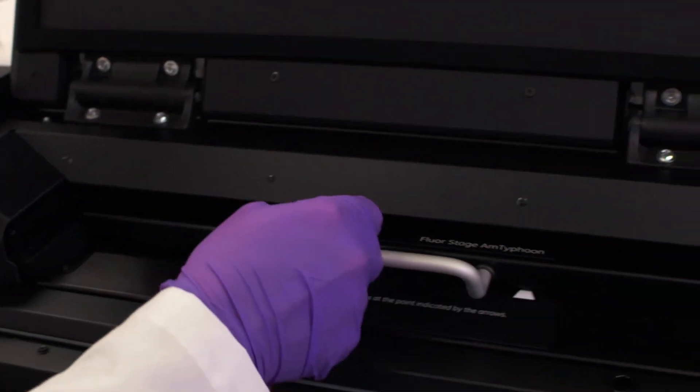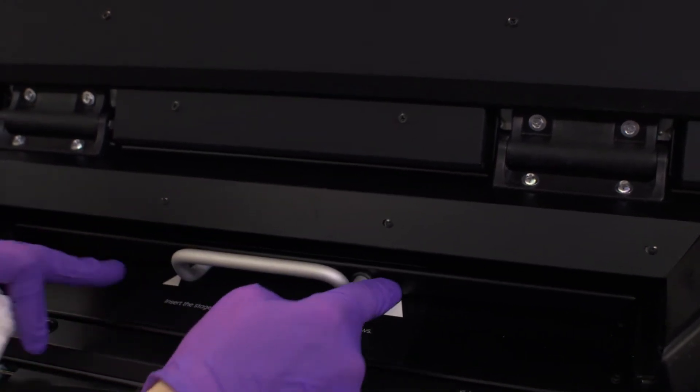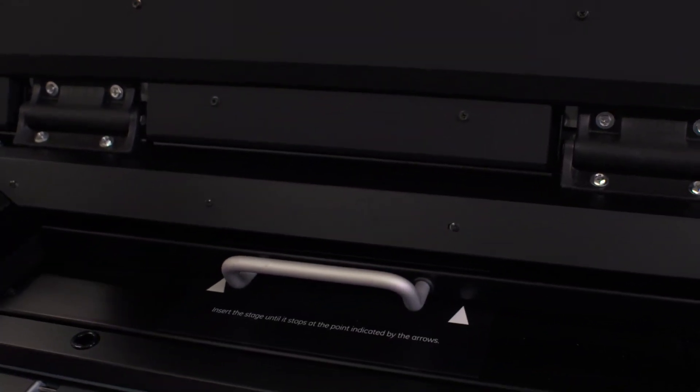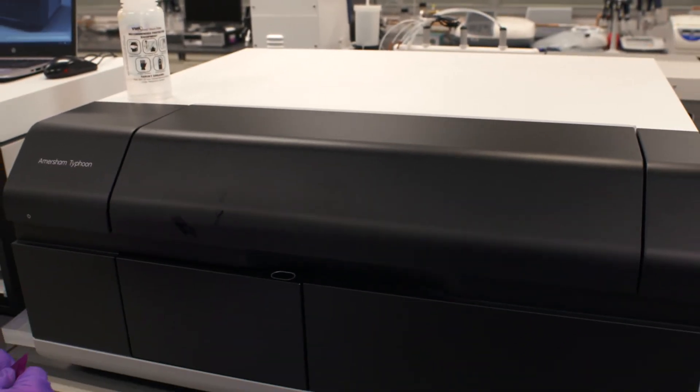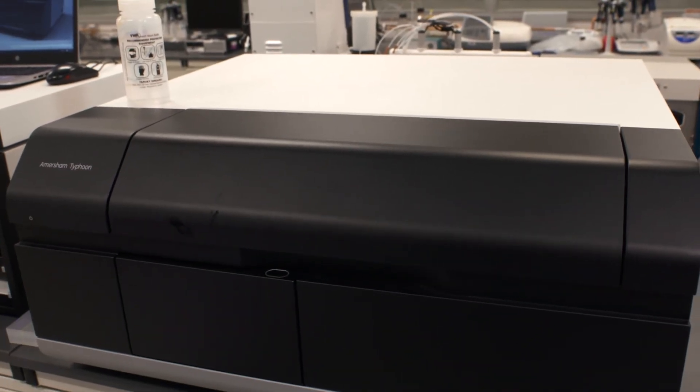Then we're going to close our stage. Make sure it's locked in by looking for the apex and the top of the triangles. I'm going to take the lid, close that, and now we're going to set up to do a fluorescent imaging scan.